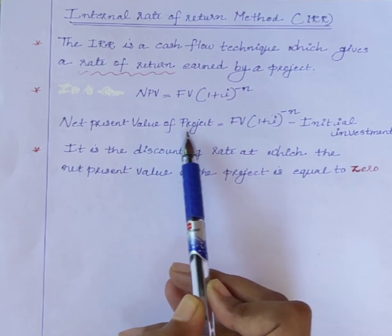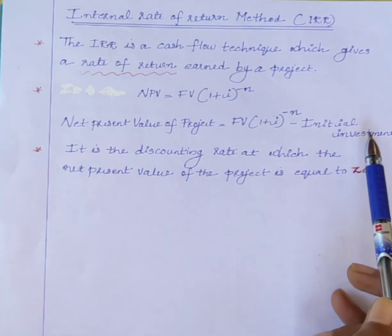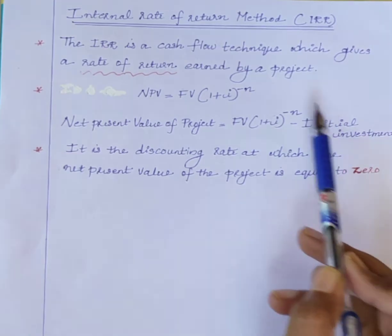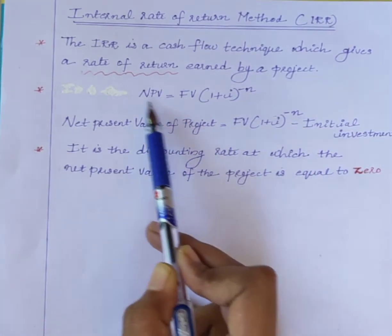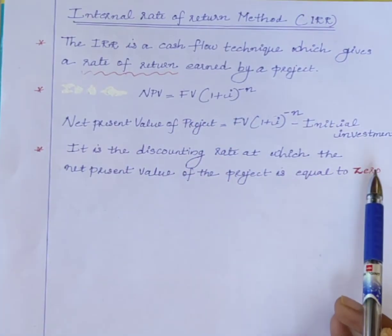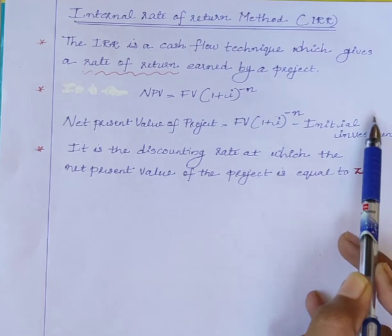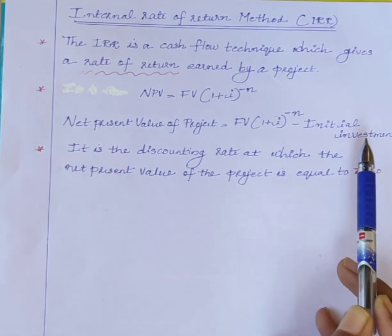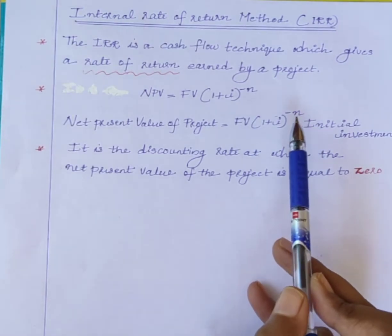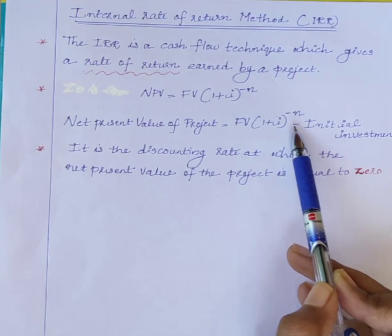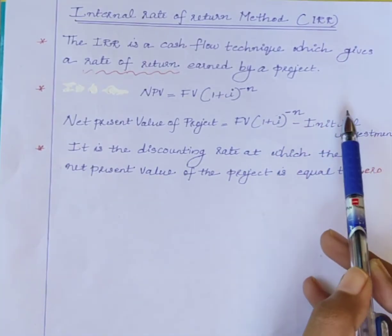Therefore, the net present value of the project is equal to FV × (1 + IRR)^(−N) minus initial investment. Using this equation, we can say that the internal rate of return is the discounting rate at which the net present value of the project is equal to 0. In other words, it is the rate of return at which the cash outflows (initial investment) and present value of inflows are equal, making the net present value of the project equal to 0. Our aim is to find the value of I such that NPV = 0, or present value of inflows equals initial investment.